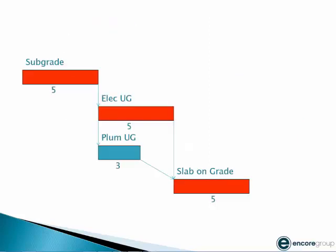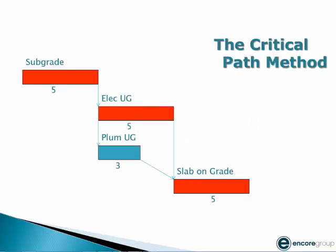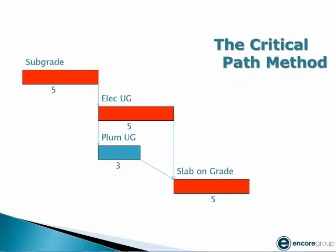The critical path has three variables: scope, time, and the third variable is logic. Logic is the relationships that each activity has in the network.